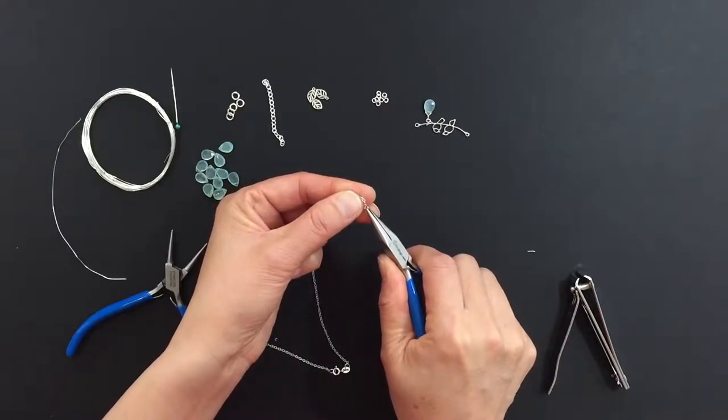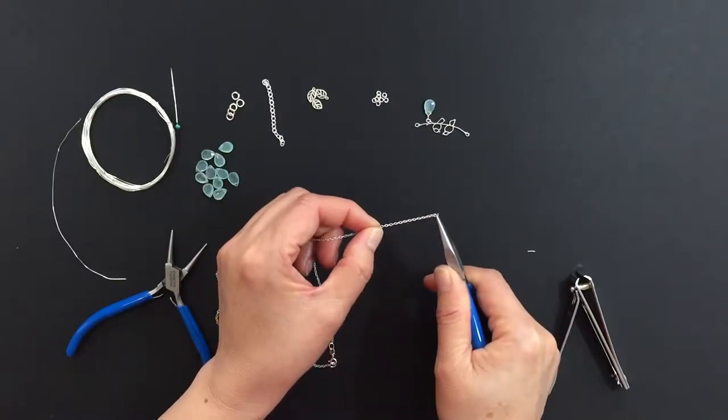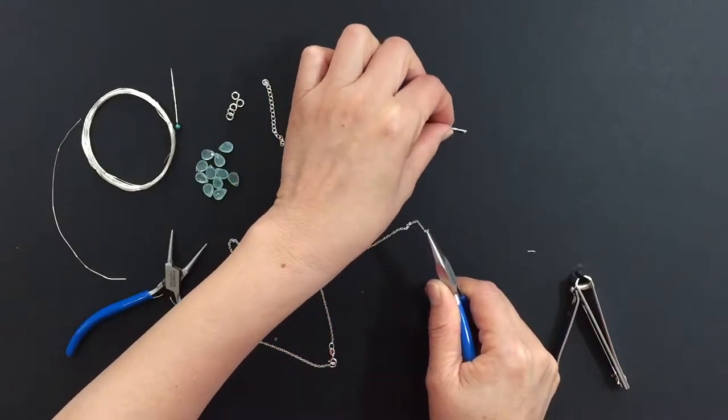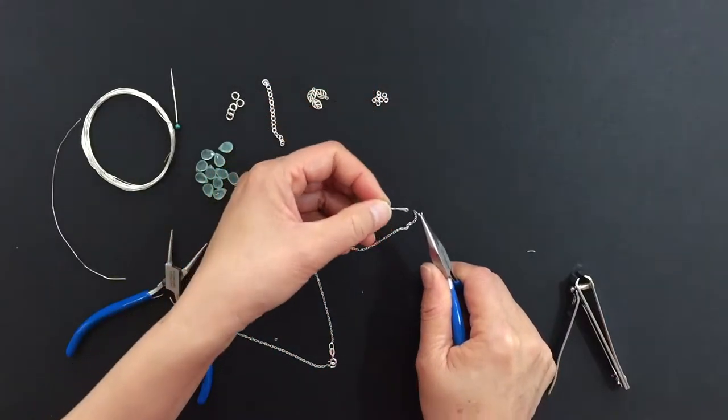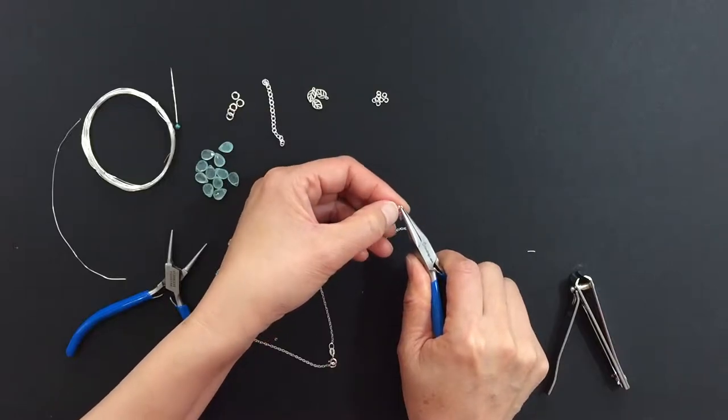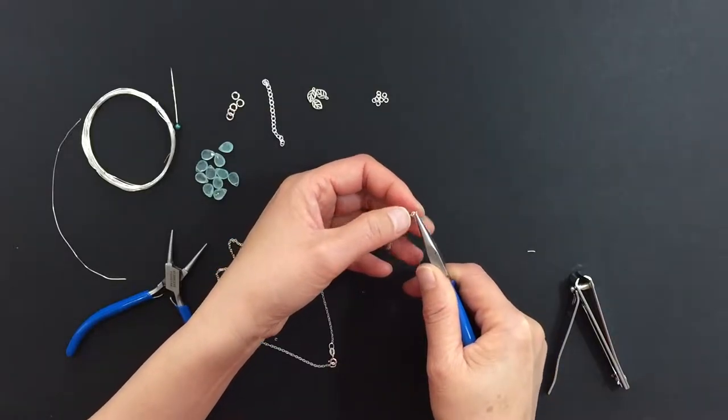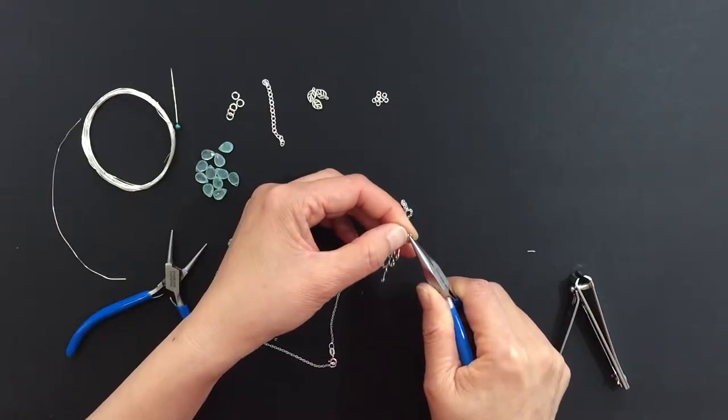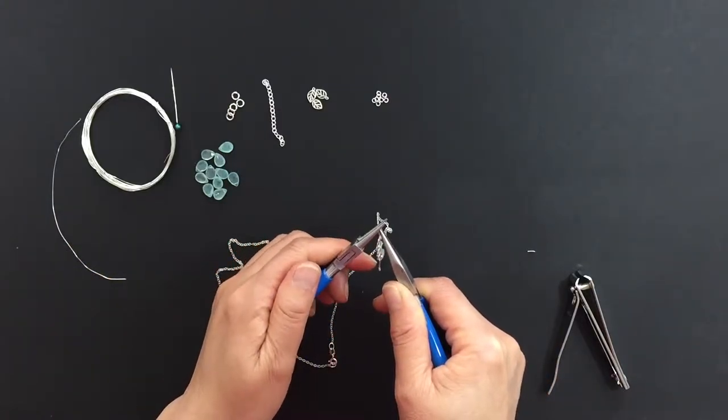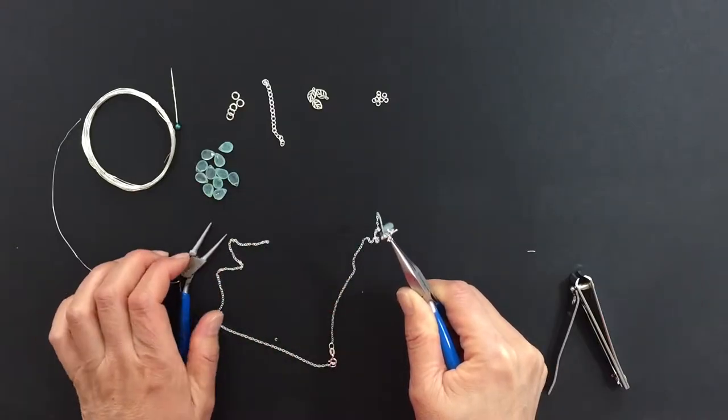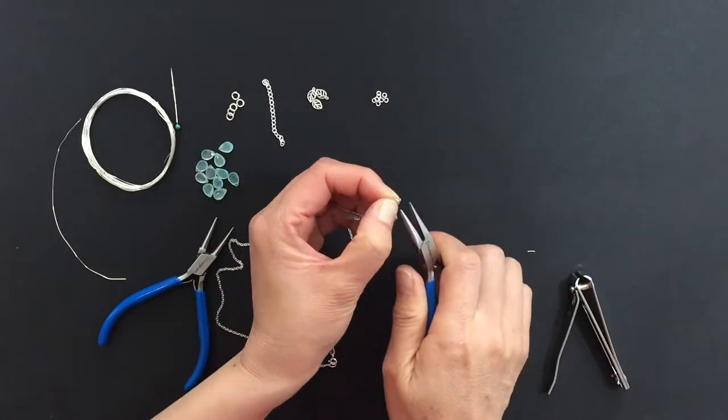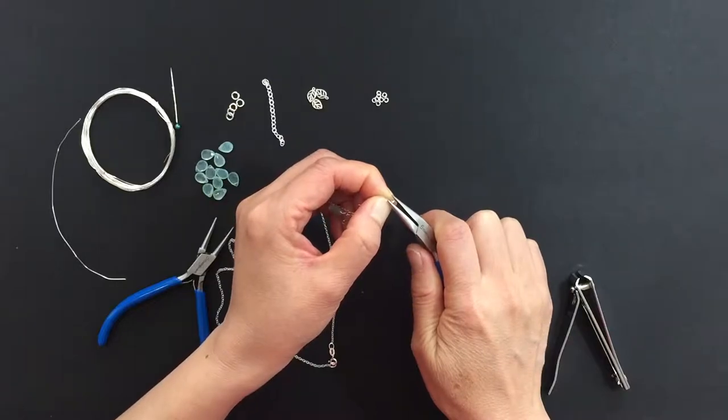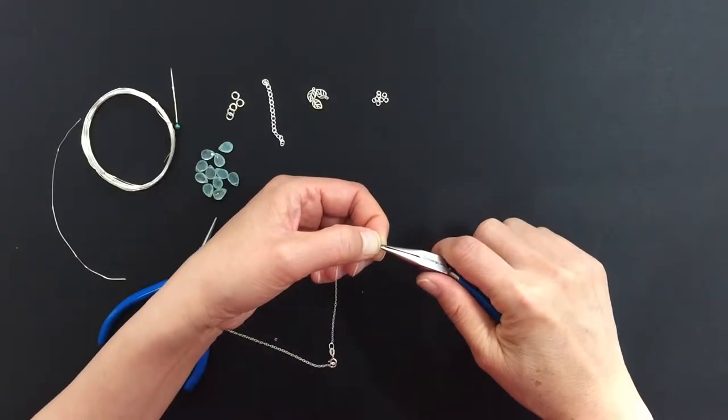Slide on one end of the cable oval chain. Now attach one end of the Amoracast sterling silver lovebird connector. Close the jump ring, making sure it is firmly closed.